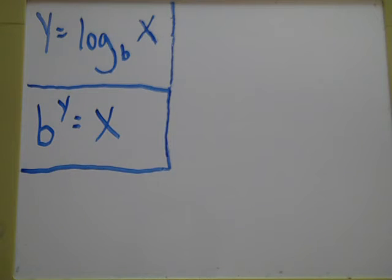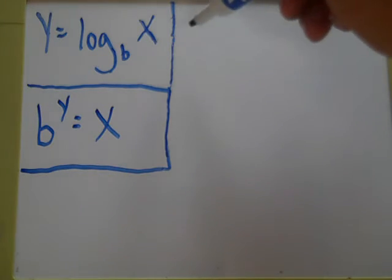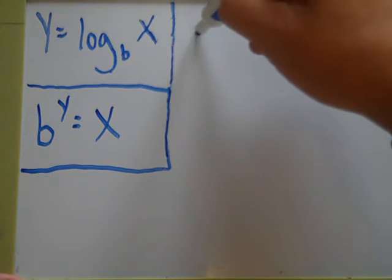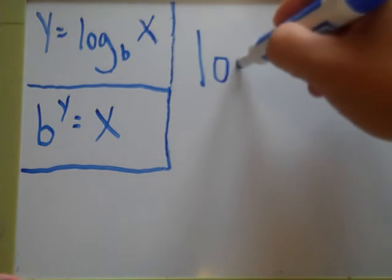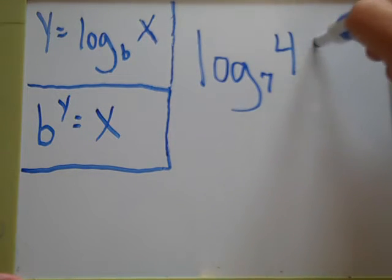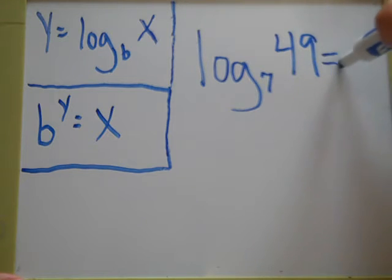And X is really just setting your exponential expression equal to something, and that'll make sense in a minute. It's actually pretty straightforward. So if I have a problem up here like, let's say log base seven of forty-nine equals y - you got a problem that looks something like that.